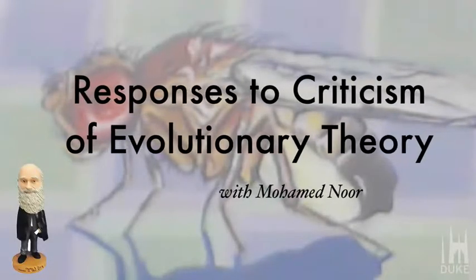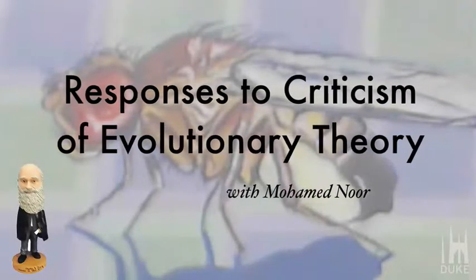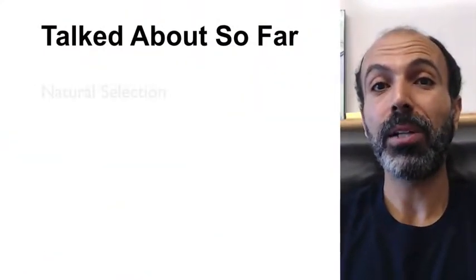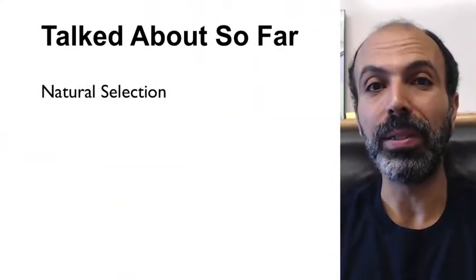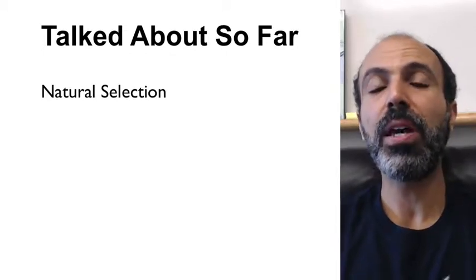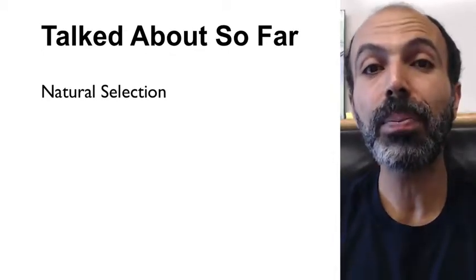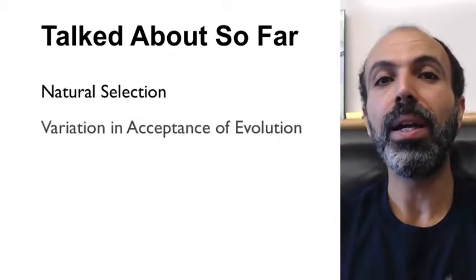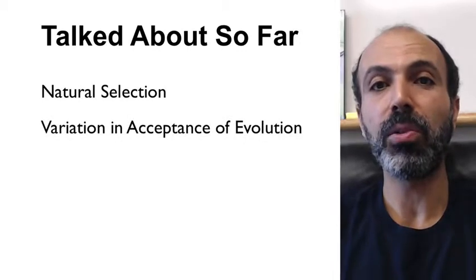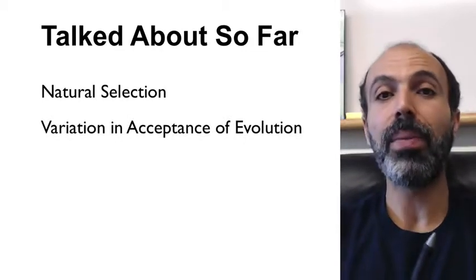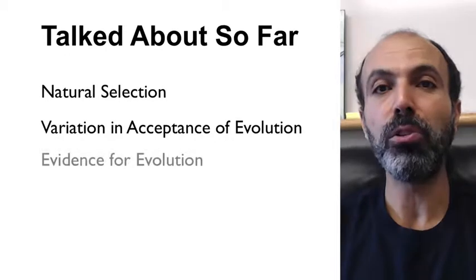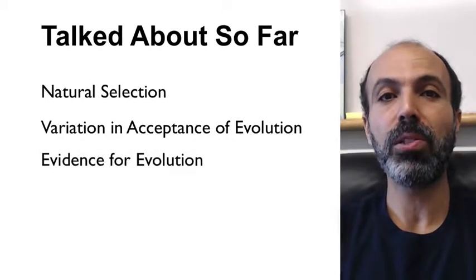Hello! Welcome back to Introduction to Genetics and Evolution. In this set of videos, we've talked about how natural selection is a mathematical inevitability. We've talked about how there's variation in the acceptance of the truth of evolution across various countries and some of the reasons for that. We've talked a little bit about evidence for evolution in common ancestry of species.